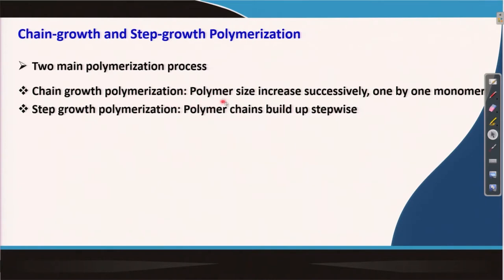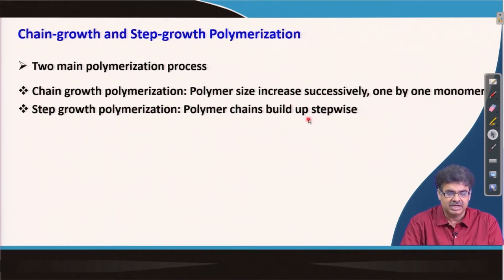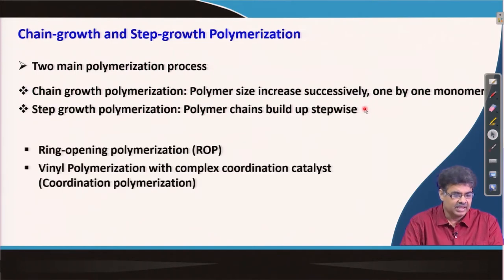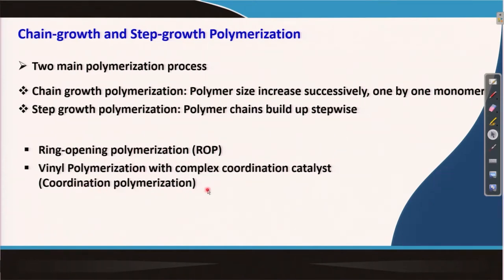In chain growth polymerization, polymer size increases by successive addition of one monomer after another. In step growth polymerization, polymer chains build up stepwise. There are a few other specialized techniques like ring opening polymerization or coordination polymers, but those actually follow either chain growth or step growth mechanisms.